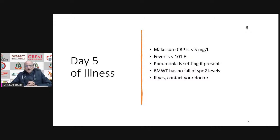If your fever is less than 101°F by day five, you are on the right track. Fever above 101 would mean continuing systemic inflammation or continuing pneumonia. If fever is persisting, it means inflammation is growing and pneumonia is worsening. Number three: pneumonia should settle down by day five.